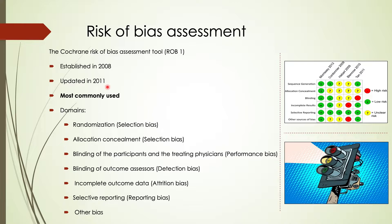In order to assess the risk of bias for a certain RCT, we use the Cochrane risk of bias assessment tool. The tool was established in 2008 and updated in 2011, and it's the most commonly used tool to assess the risk of bias nowadays, especially for those working on systematic reviews who would like to assess the risk of bias of their included RCTs. The tool consists of seven domains that assess bias arising from the randomization process, allocation concealment, blinding of study participants and treating physicians, blinding of outcome assessors, incomplete outcome data, selective reporting, and other sources of bias.